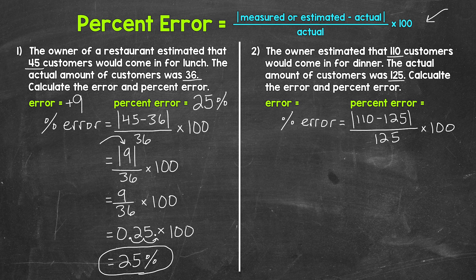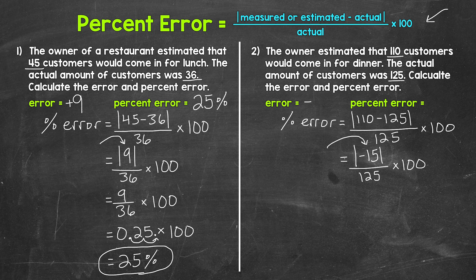Let's work through this. We have the estimated value, 110, minus the actual value, 125. That gives us negative 15. And that's our error. So we have the absolute value of negative 15, divided by 125, times 100. The error is negative 15. That negative tells us that the estimate was under — so the owner's estimate was off by 15, and it was under by 15.